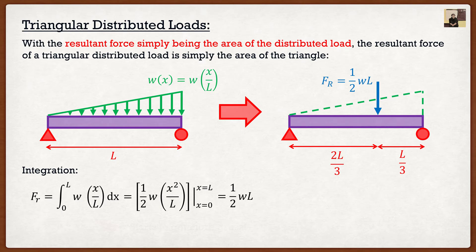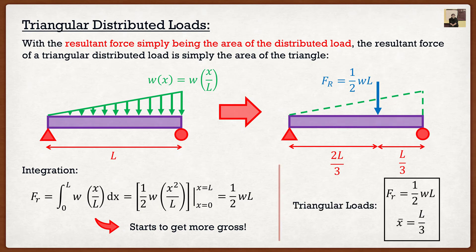As the distributed load becomes more nonlinear, the math gets really complex — this is why we stop at triangular in this course, and because higher-order loads aren't realistic. For triangular loads, the resultant force is ½W·L, and it acts at a distance of L/3 from the higher side of the distributed load, or equivalently 2L/3 from the point where it's zero. If the load is flipped — starting high and going down — the L/3 distance is still measured from the higher side.